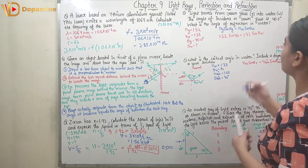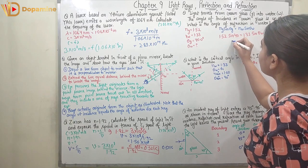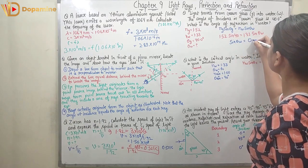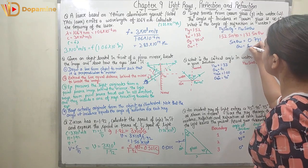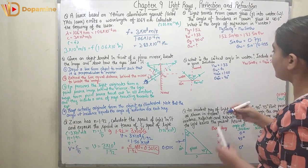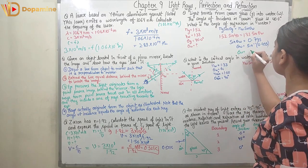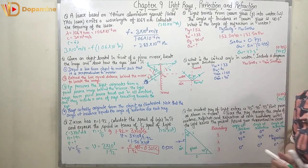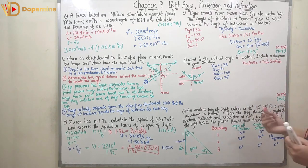Rearranging, sin θ_w = (1.52 × sin 40°) / 1.33 = 0.735. Therefore θ_w = sin⁻¹(0.735) = 47.3°. This is the angle of refraction in water.